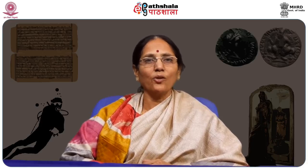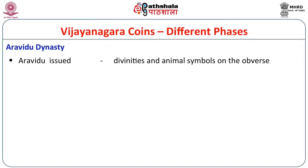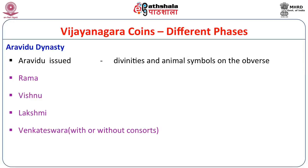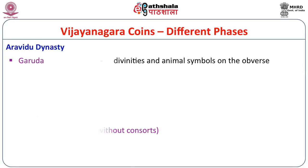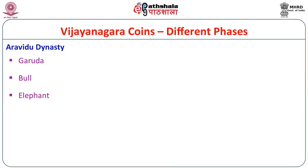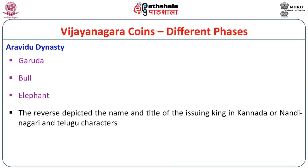Telugu language also came up during this period, and they issued coins in Telugu characters as well. Coming to the Aravindu dynasty, the divinities and animal symbols on the upper side changed dramatically, featuring Vaishnavite symbols: Rama, Vishnu, Lakshmi, Venkateshwara with or without consort, Hanuman, Garuda, bull, and elephant. On the reverse side, they depicted the title of the issuing king in Kannada, Nandhinagari, and Telugu characters, as with the earlier kingdoms.